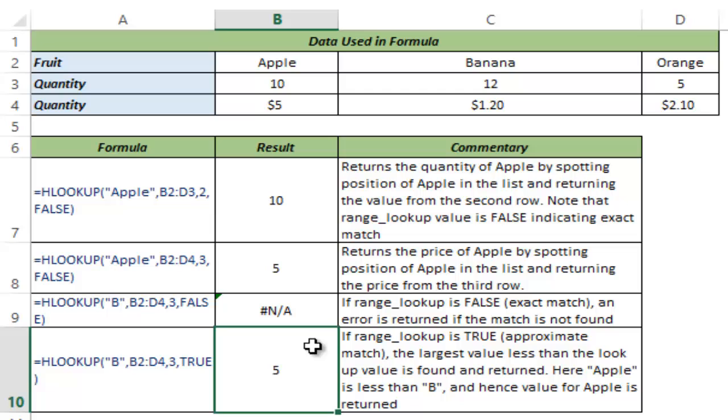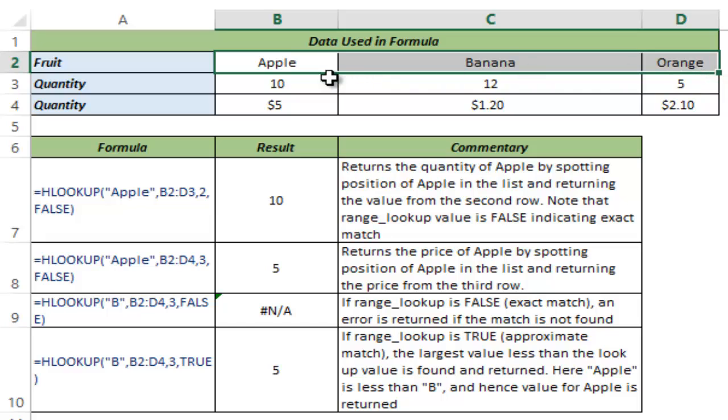And you can see that this returns 5 because while it's looking for this alphabet B here it scans this row and it sees that apple is not a match. Apple is also in terms of alphabetically lower than capital B and it goes to banana.